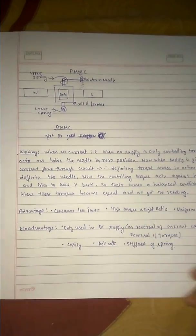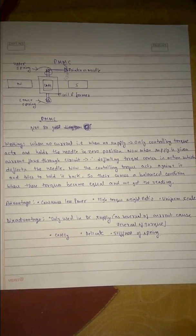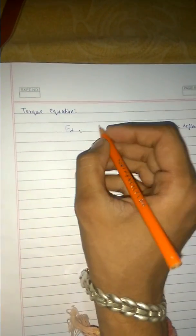These are the advantages, disadvantages, and working principle. Now the torque equation. As the coil is kept in a magnetic field, it will experience some force — that is the deflecting force. The expression for deflecting force is given as F = N × B × I × L.